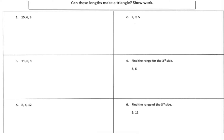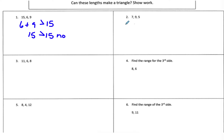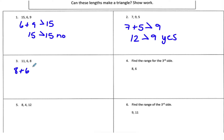Can these lengths make a triangle? You have to add and compare — the two shorter sides must be longer than the longest side, otherwise they can't connect to form a triangle. For number one, 6 plus 9 equals 15. Is 15 greater than 15? No, so they cannot form a triangle. For number two, 7 plus 5 is 12, which is greater than 9 — yes. For number three, 8 plus 6 is 14, which is greater than 11 — yes.